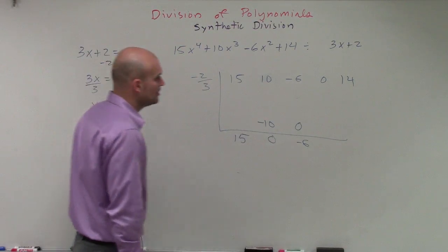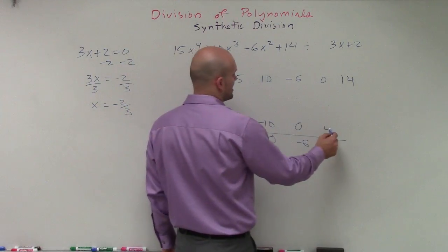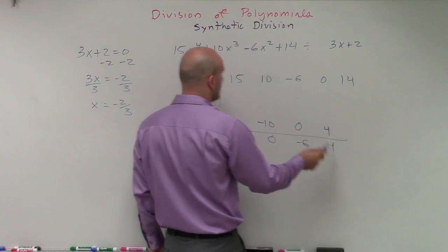Negative 6 times a negative 2 thirds is going to be a positive 12 over 4, which is going to be a positive 12 over 3, which will be a positive 4. 0 plus 4 is going to be 4.